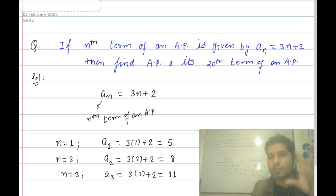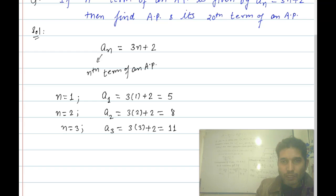So we find the three terms of an AP. Then we have the resulting sequence here. So the AP is 5, 8, 11, and so on. This is the resulting AP.